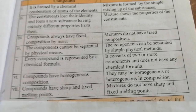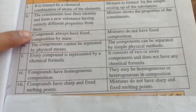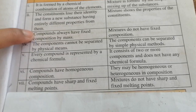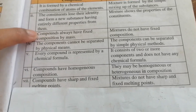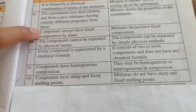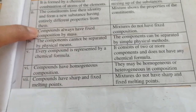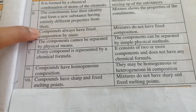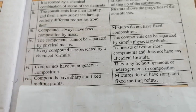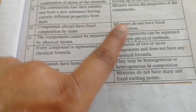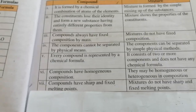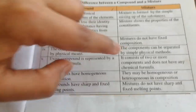A compound is made by a fixed composition by mass. For example, water is made of two hydrogen atoms and one oxygen atom. In a mixture, there is no fixed composition — you can add any amount of each component as you like.